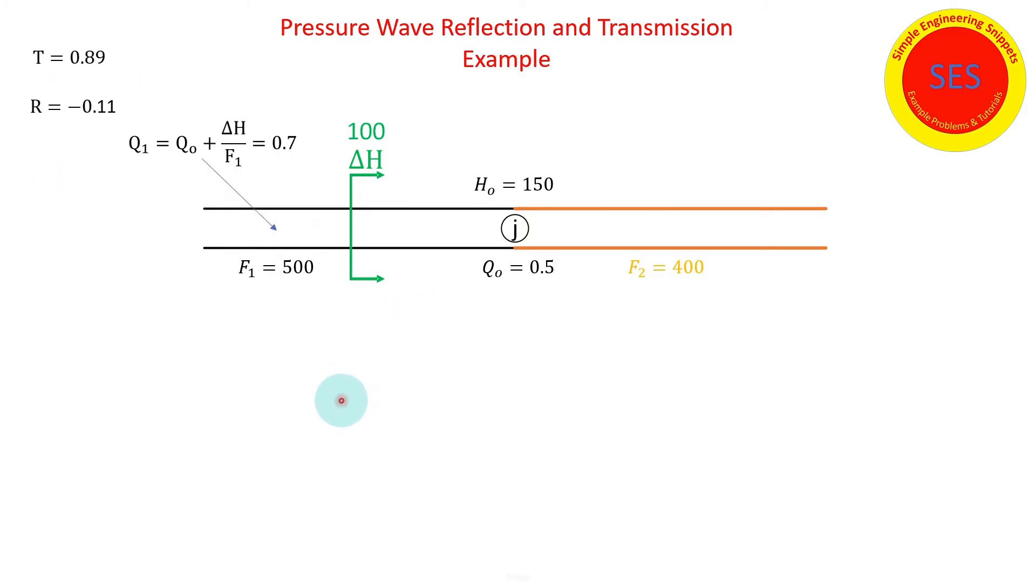So we worked through the example and we got that the flow behind the wave changed from 0.5 to 0.7.